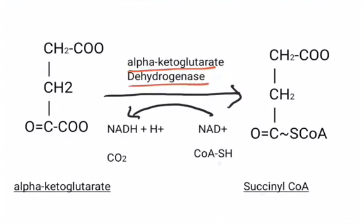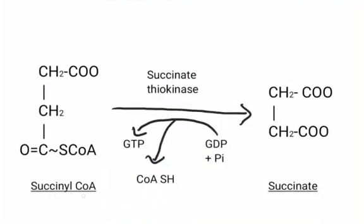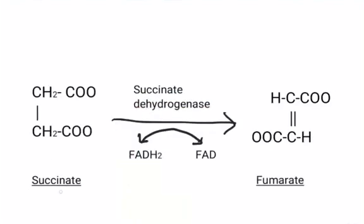In this step, CoA-SH is added and CO2 is liberated. Now succinyl CoA, in the presence of the enzyme succinate thiokinase, gets converted into succinate. Here, CoA-SH is released and one GDP gets converted into GTP, thus energy is generated. Now succinate, in the presence of the enzyme succinate dehydrogenase, gets converted into fumarate.